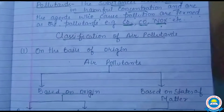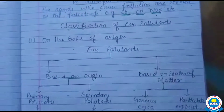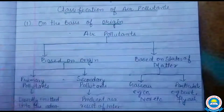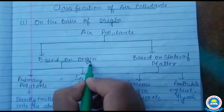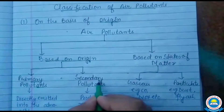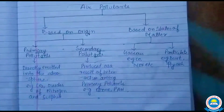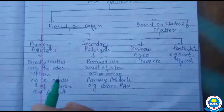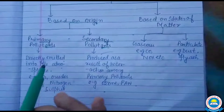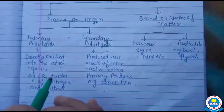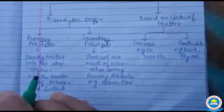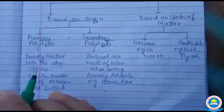Classification of air pollutants based on origin: first, primary pollutants and secondary pollutants. Primary pollutants are directly emitted into the atmosphere — pollutants directly emitted into the atmosphere are called primary pollutants.